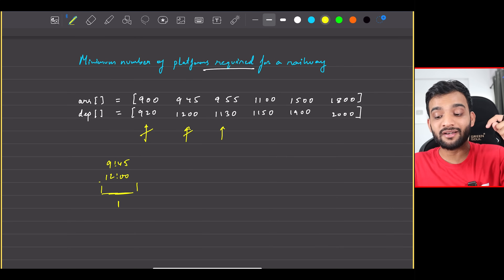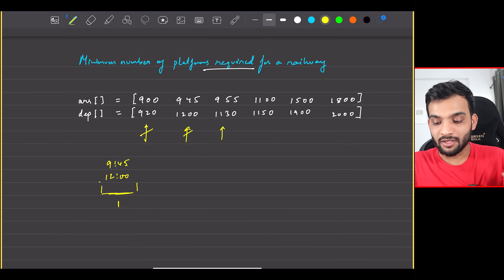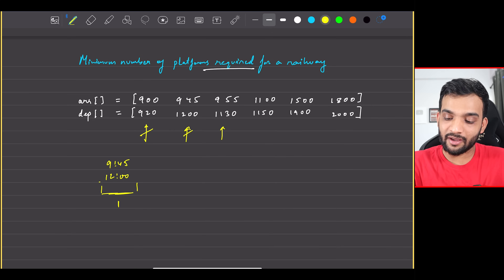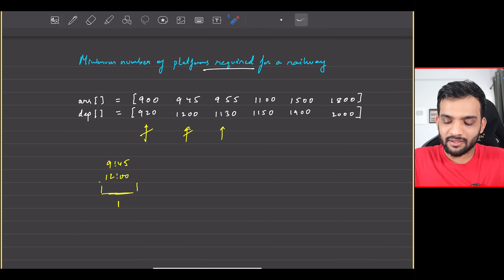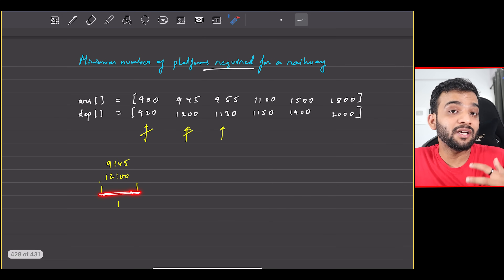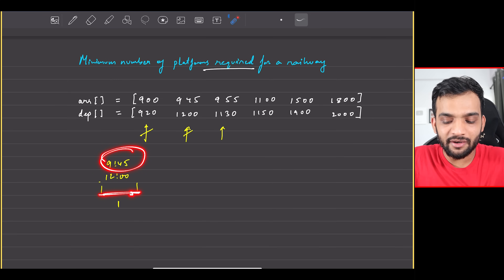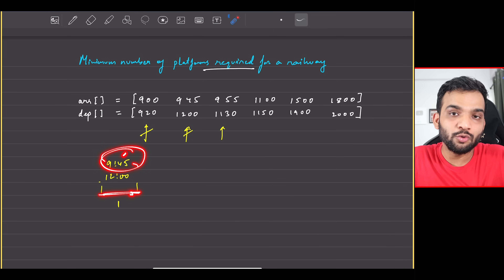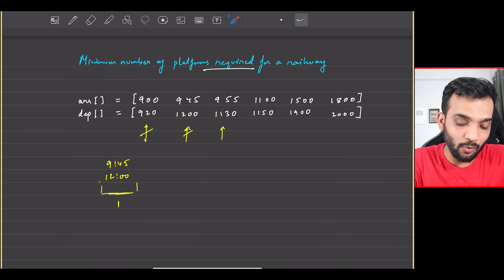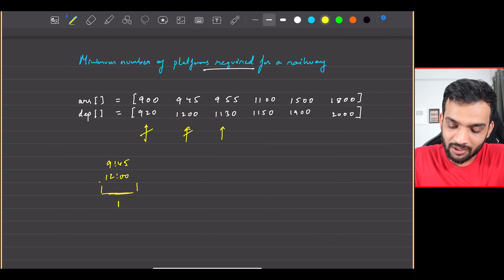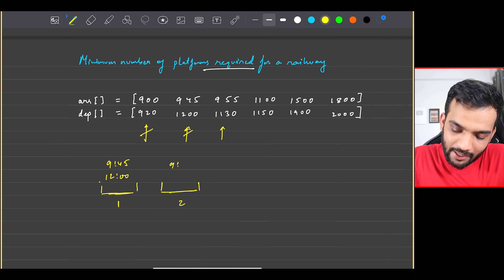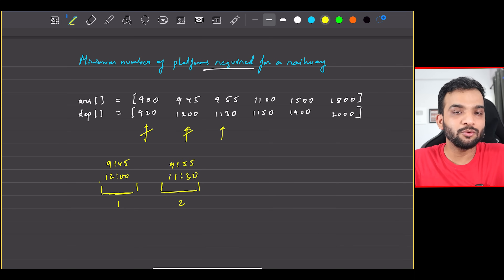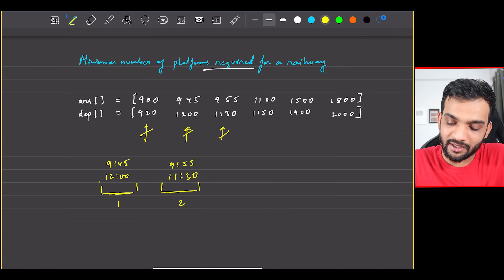The next train arrives at 9:55. Can it use platform one? No, because there's already a train from 9:45 to 12:00 on that platform. So this train will go to platform two, occupying it from 9:55 to 11:30.